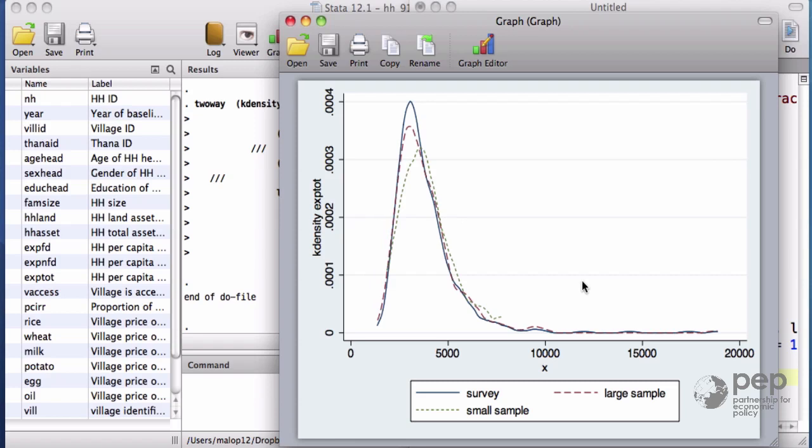The magic of randomization is that not only the variables that we observe will be similar. The theory tells us that even the variables that we cannot observe, ability, motivation, social networks, etc., will also tend to have the same mean as the target population.